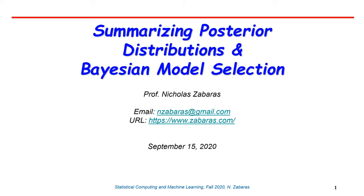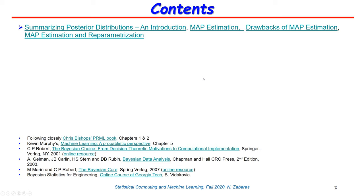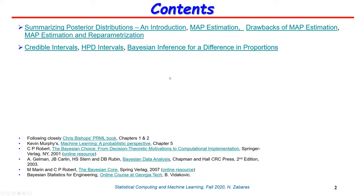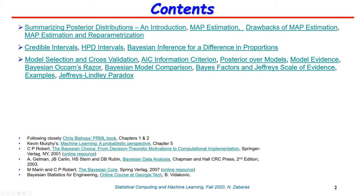So let's see what some of the topics will be. We will revisit the calculations for the MAP estimate and discuss drawbacks of MAP estimation. If you remember, we already have seen that when it comes to computing the predictive distribution with plug-in estimates, the most sensible estimate to use to avoid overfitting was the posterior mean. Today we will see a few more drawbacks of MAP estimation, some of them related with what's called reparametrization.